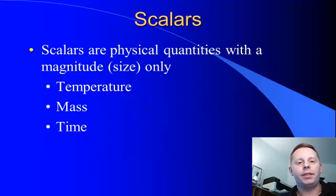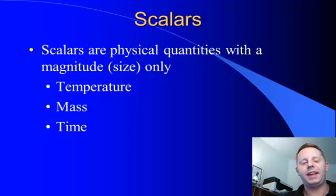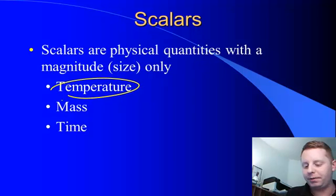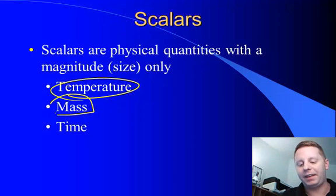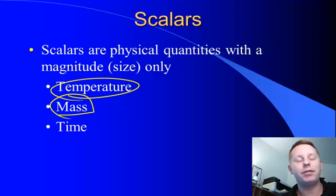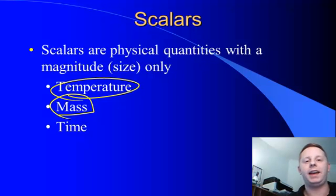So to begin with, let's talk about scalars. Scalars are physical quantities that have a magnitude or a size only. Things like temperature, doesn't have a direction, it only has a size. Mass, how much stuff you're made up of in kilograms, doesn't have a direction associated with it. Or time, which we measure in seconds. And you may think of time going forward and backward, but that's not really a direction like a direction on the compass. So those are all scalar quantities.